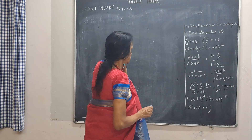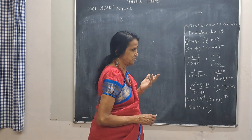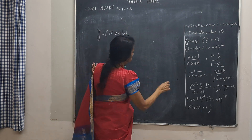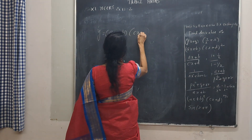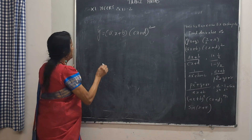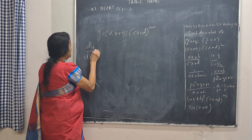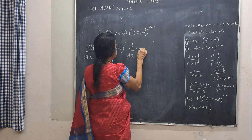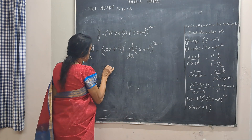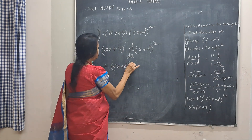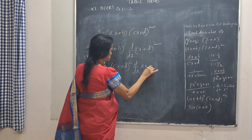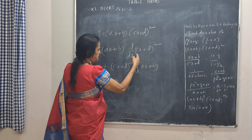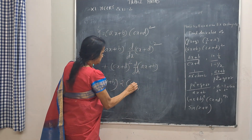Next we have product rule combined with function of a function, that is chain rule. y equals (ax + b) into (cx + d) whole squared. So dy/dx equals first function into derivative of the second function, plus second function into derivative of the first function. This is (ax + b) times derivative of (cx + d)².